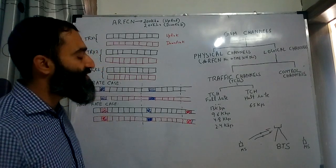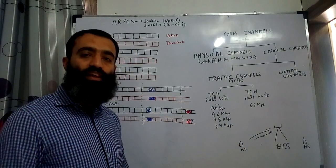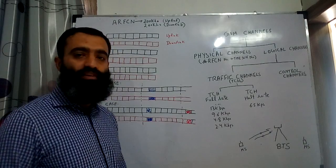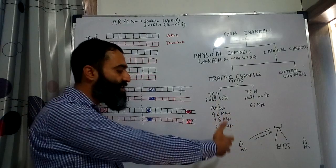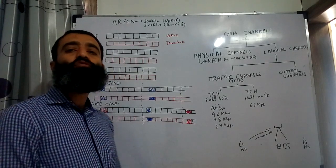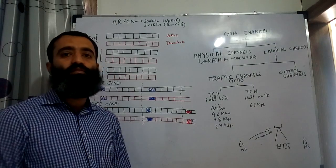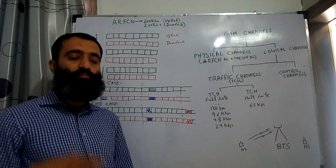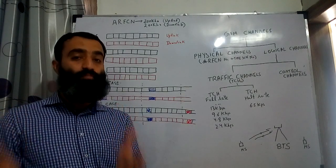When we talk about the GSM channels, basically these are the channels which are allocated on the radio or the air interface. This means they are allocated between the BTS and the mobile station. As we discussed earlier, the number of frequencies that are assigned to a BTS determine its capacity.